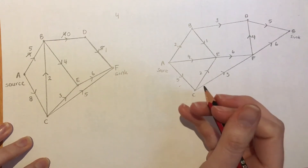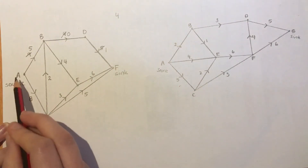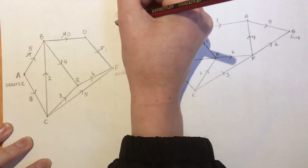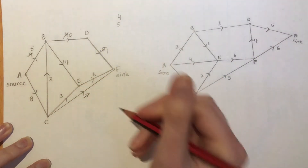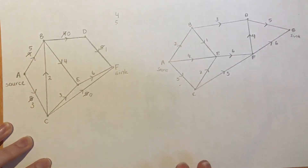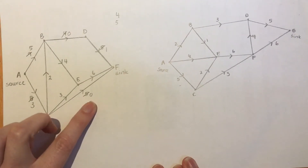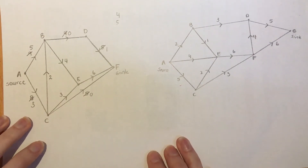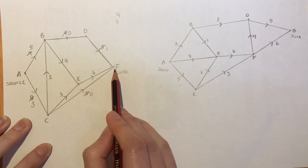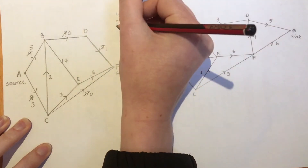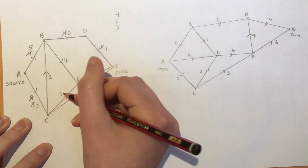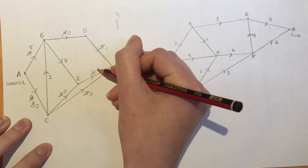Now find any other path that connects the source to the sink that doesn't yet have a zero in it. I'm going to go down here: eight and five. The smallest number in that path is five, and I subtract it from all numbers along that path, so I get a three here and a zero there. Find any other path without a zero — I go three, three, and six. The smallest is three, so I subtract it from each, getting zero, zero, zero, and three.